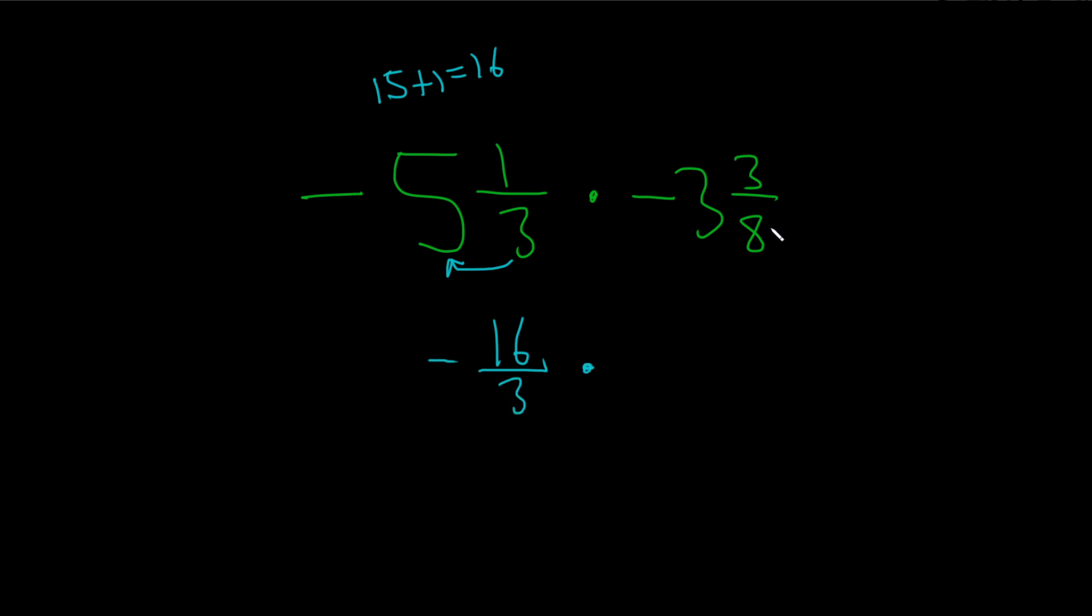Times. Let's do this one now. So here we do 8 times 3, which is 24. And then 24 plus 3 is 27. So 8 times 3 is 24, 24 plus 3 is 27. You put that here, and then you keep the 8.